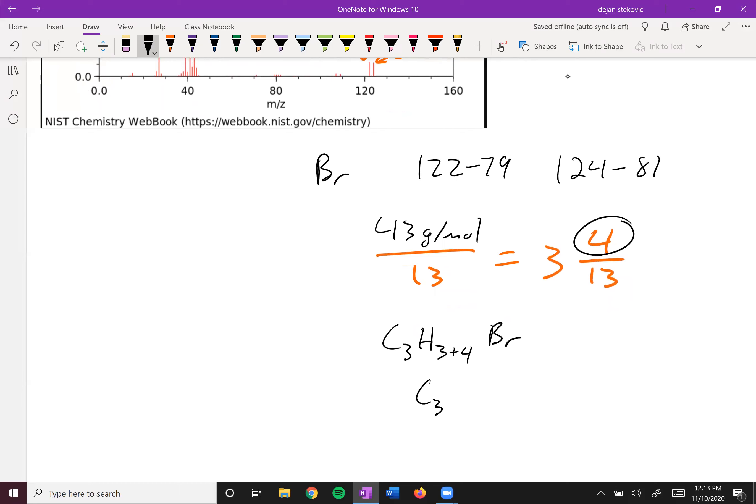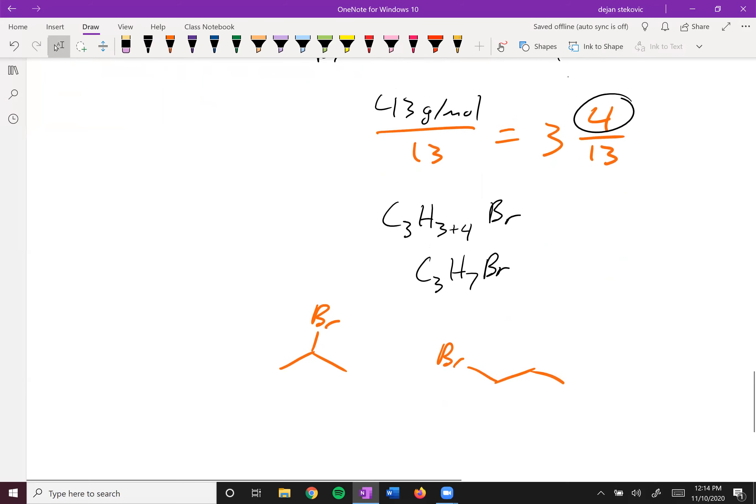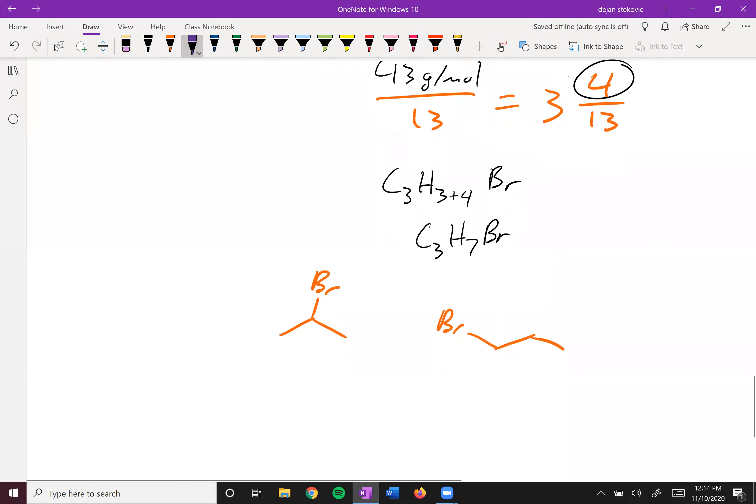So this ends up being C3H7Br. And so you can think of ways you could make this molecule. Maybe the bromine is centered around these three carbons. Or maybe it's around there. There's a whole bunch of constitutional isomers you could draw out that could be plausible answers.